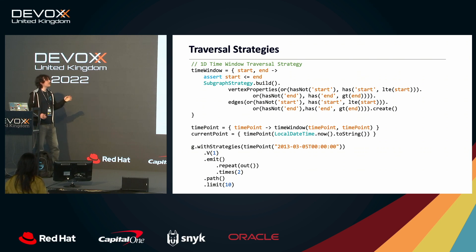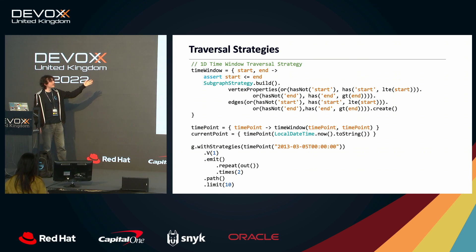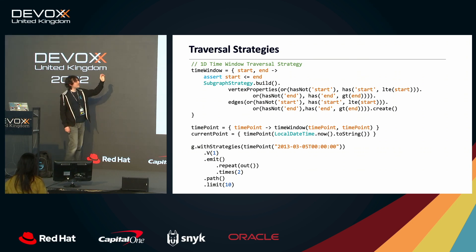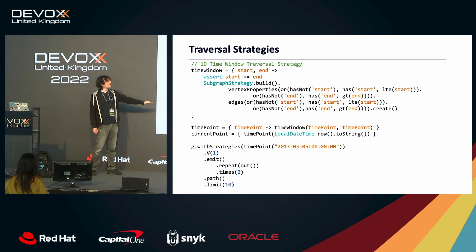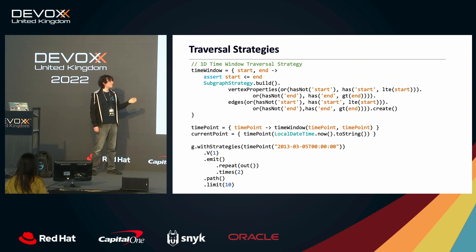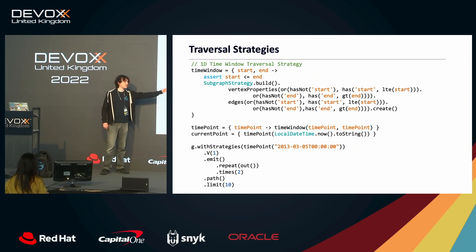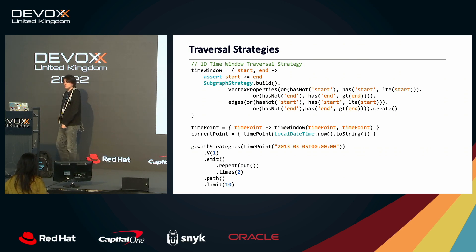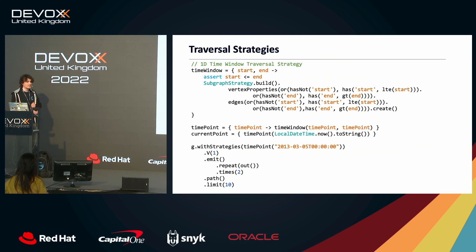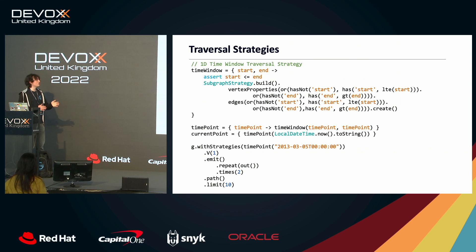There are a few built-in traversal strategies, but you can make your own very easily. This is essentially the same temporal filtering code as before but in Gremlin — rather than writing it on each individual query, we define a strategy that checks every vertex and every edge. Then all you have to do is say 'with strategies,' give it your viewpoint of time, and that's it. Whether you need to deal with bi-temporal, tri-temporal, or any other temporal dimension, you just write an appropriate traversal strategy and tell people to use it.